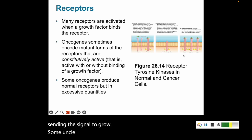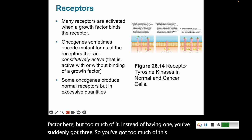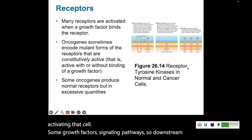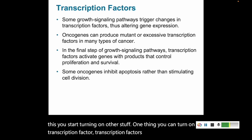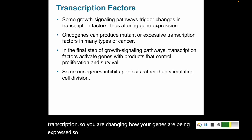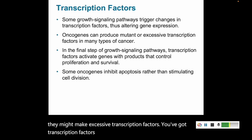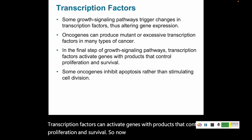Some oncogenes make the regular healthy growth factor, but too much of it — instead of one, you suddenly have three — so too much of this signal is activating that cell. Downstream from growth factor signaling, you start turning on other things, including transcription factors. Transcription factors cause gene transcription, changing how genes are expressed. Oncogenes might make mutant transcription factors or excessive transcription factors, turning on genes in ways they shouldn't be. Transcription factors can activate genes whose products control proliferation and survival, amplifying the cell's ability to proliferate and survive.